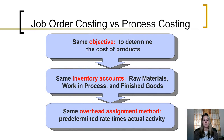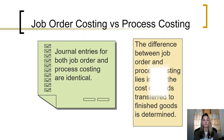These two costing systems have the same objective: to account for and determine the cost of products. They use the same inventory accounts — raw materials, work in process, and finished goods. They still assign overhead exactly the same way, using a predetermined overhead rate times the actual cost driver activity. The journal entries are exactly the same for a job order and a process costing system.